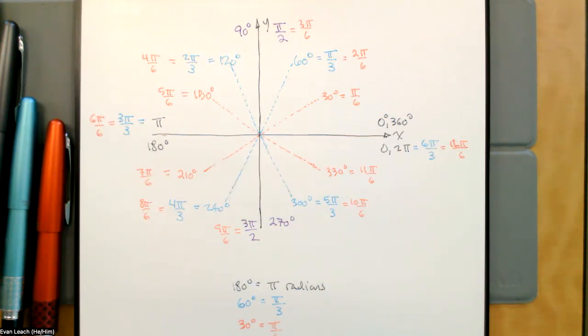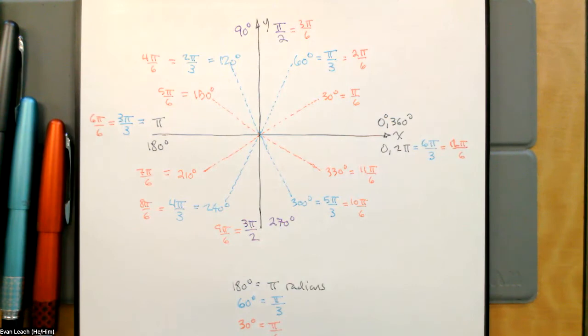So 180 degrees is pi radians. That means pi over 2 is 90, pi over 4 is 45, pi over 3 is 60, and pi over 6 is 30.